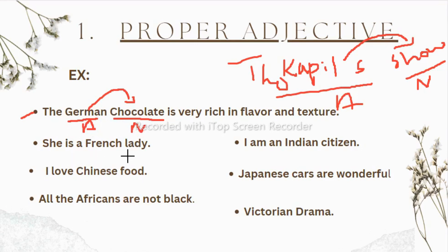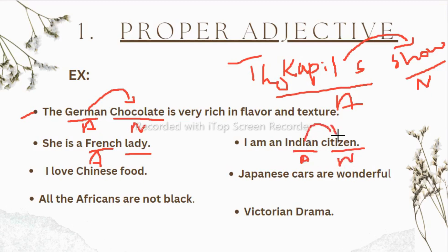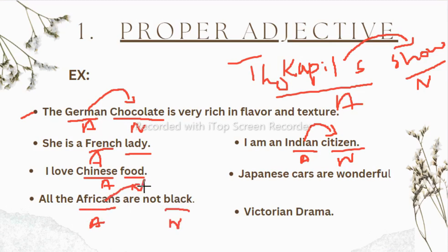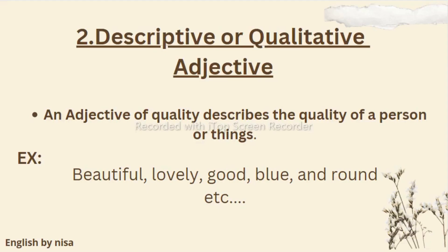She is a French lady — 'lady' is a common noun and 'French' is the adjective showing quality. I am an Indian citizen — 'Indian' is the adjective and 'citizen' is the noun, showing the citizen belongs to India. I love Chinese food — 'Chinese' is adjective and 'food' is noun. Africans black — 'black' is a noun and 'Africans' shows its quality. Victorian drama — 'drama' is the noun and 'Victorian' is the adjective.